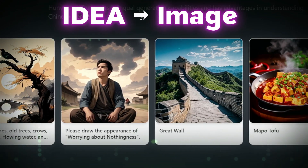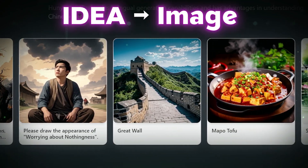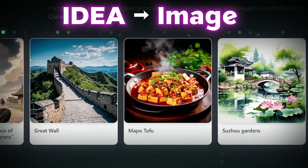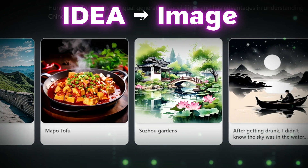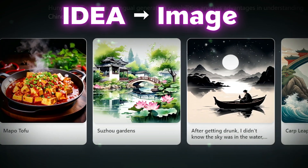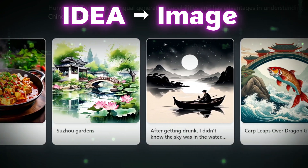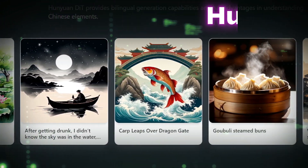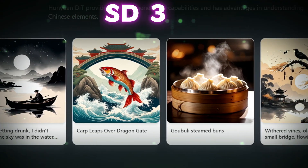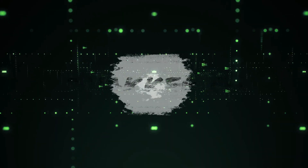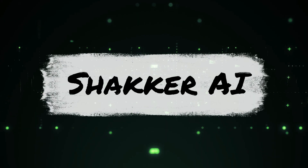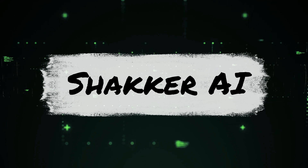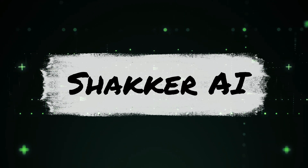Ever imagine transforming your ideas into stunning visuals with just a few clicks? What if you could not only create, but also have access to the latest AI image generation models like Hunyuan DIT 1.2, SD3, and more? Well, that's just the beginning. Welcome to Shaker AI, a platform that's not just about creating images — it's about revolutionizing them.